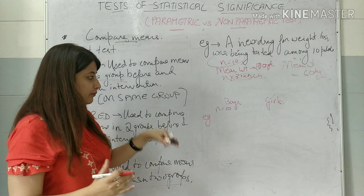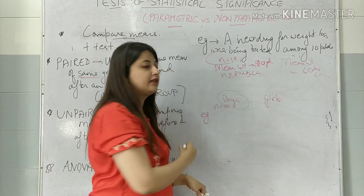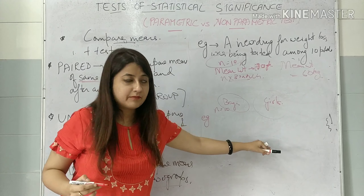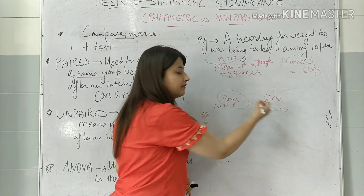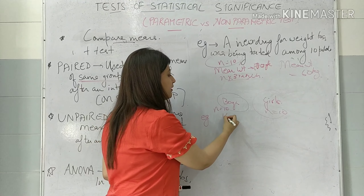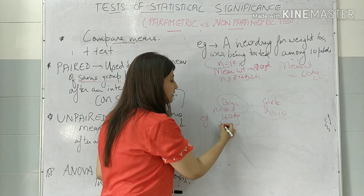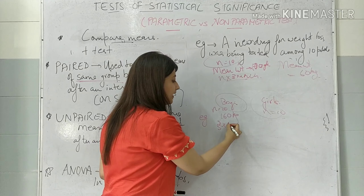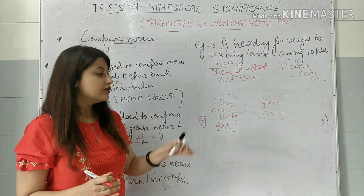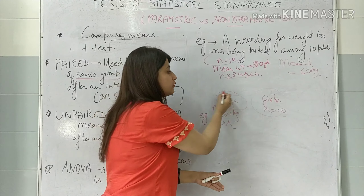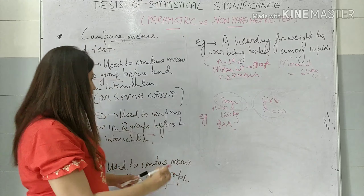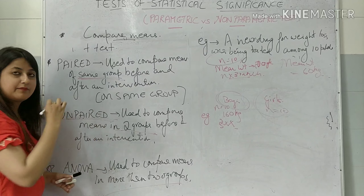For an unpaired T-test: suppose I do it in two different groups — boys and girls. Here I have 10 boys, here also I have 10 girls. The mean weight of the boys is say 160 kg. I give the drug for 3 months, then I record their weight. Similarly I do it for girls. So I am comparing the means of two groups before and after an intervention — this becomes an unpaired T-test.